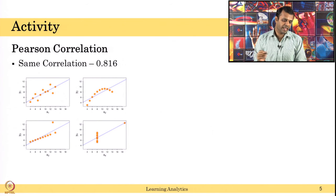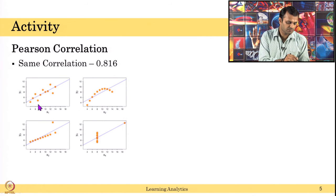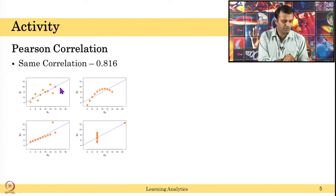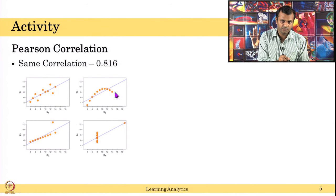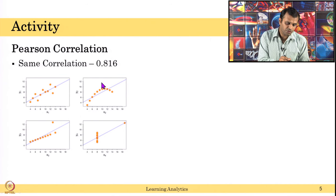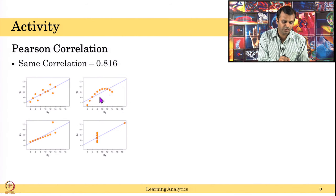All four have the same correlation coefficient. In the last video we talked about drawbacks of Pearson correlation, and this example gives you all the details of that. The first one, x1 versus y1, is scattered around a linear relationship, so there is a 0.816 correlation — that is okay. The second plot is not a linear relationship: Y is non-linear with respect to X, yet it still has a correlation coefficient of 0.816 because a line can still be fit through those points.